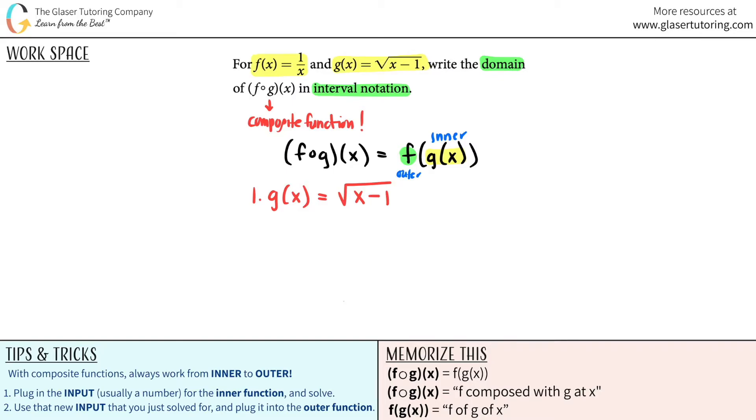And now for the second part, you take that answer, it's going to be the new input that we just solved for and plug it in into the outer function. So for the second part, the outer function was the f function. But now it's the answer to what you just wrote. Which means that anytime that you see an x value, you're now just plugging in what you have. So instead of it being one over x, you're just replacing this whole thing. So it's going to be one over the square root of x minus one.